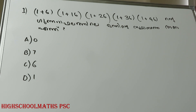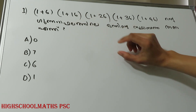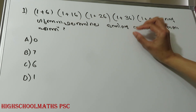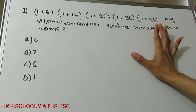The units digit in the product of (1+6) × (1+16) × (1+26) × (1+36) × (1+46). That is: 7 × 17 × 27 × 37 × 47.